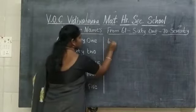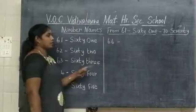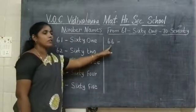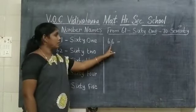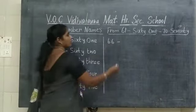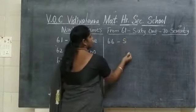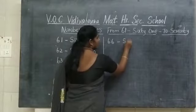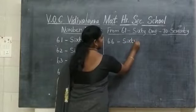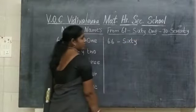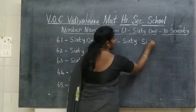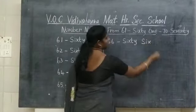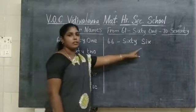6, 6 — 66. What number is this? 66. What is the spelling of 66? S-I-X-T-Y S-I-X. 66.